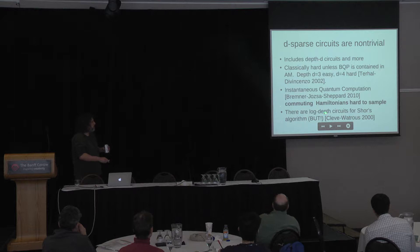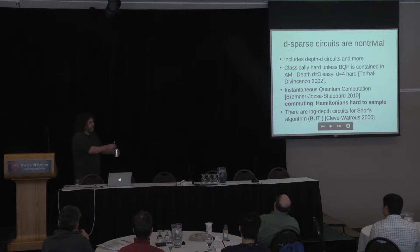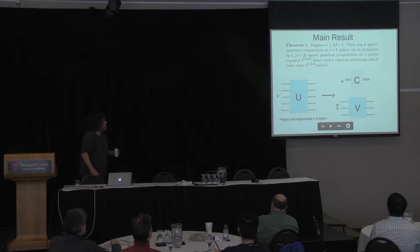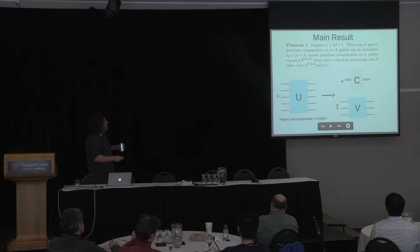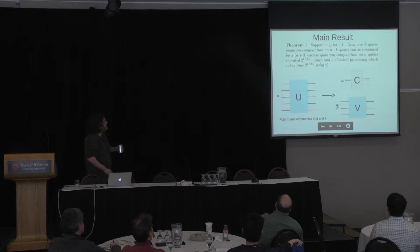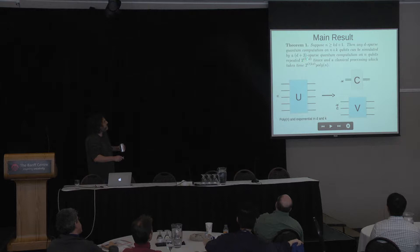There are log-depth circuits for Shor's algorithm, which made us think everything was going to be great. But the problem is that making Shor's algorithm log-depth requires adding auxiliary qubits - so it's not actually helpful here. The main result is: if you have n qubits and a D-sparse circuit you want to run on n+k qubits, you can simulate it with a D+3-sparse circuit on just the original n qubits.